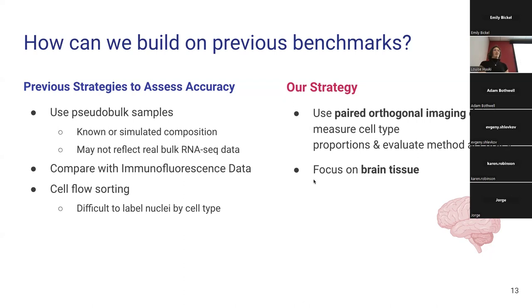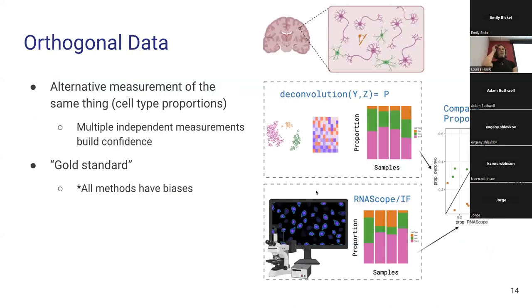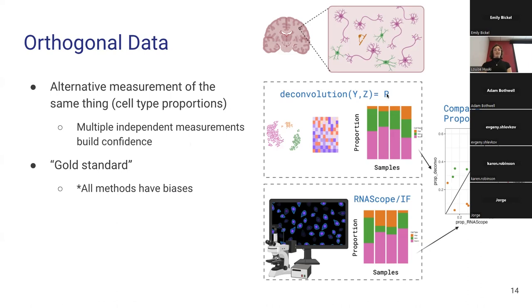Rather, our strategy was to use a paired orthogonal imaging dataset to measure cell type proportions and use those to evaluate method accuracy, specifically focused on brain tissue. So what is orthogonal data? The idea is that we want to measure the same thing — here being cell type proportions — using two different methods that don't interact, so they're not skewed by each other. Multiple independent measurements help build confidence in what's really happening in the tissue. In our study, we estimate cell type proportions through deconvolution and also through RNA scope immunofluorescence imaging, counting up individual cells, and then compare them together.